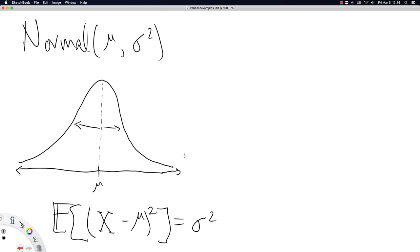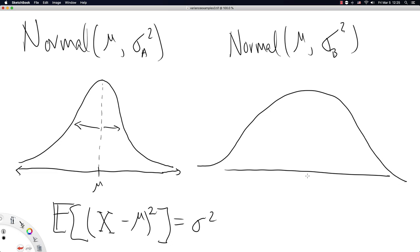Now the variance doesn't tell us much by itself but if you were to compare a new distribution with the same mean, let's name this one a and now you have sigma b. If you were to compare this distribution and this new distribution looks like this, then sigma a squared would be less than sigma b squared. So variances by themselves don't tell you much but what they do tell you is relative to another distribution how wide is that other distribution compared to the first. In this case we see that this distribution is wider than this distribution.